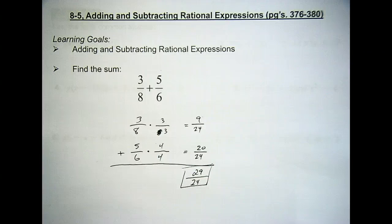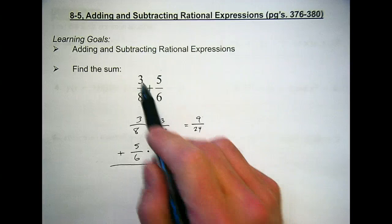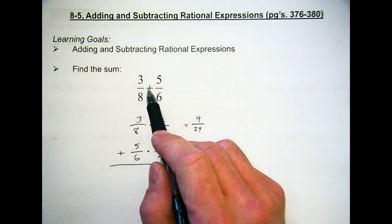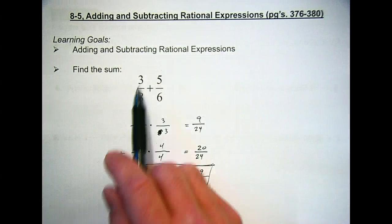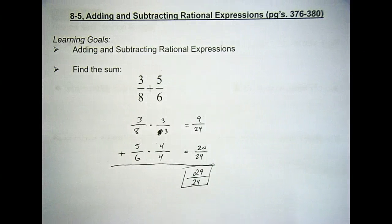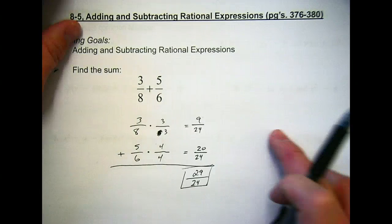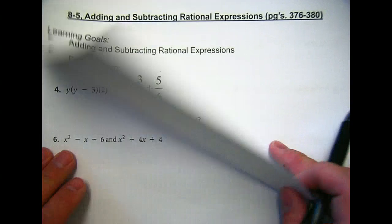A student asks: can you cross-multiply and cancel the 4 and 6 to a 3? No — you can't cancel because it's not multiplication. We can't cross-cancel. Other questions? Okay, let's move on now.